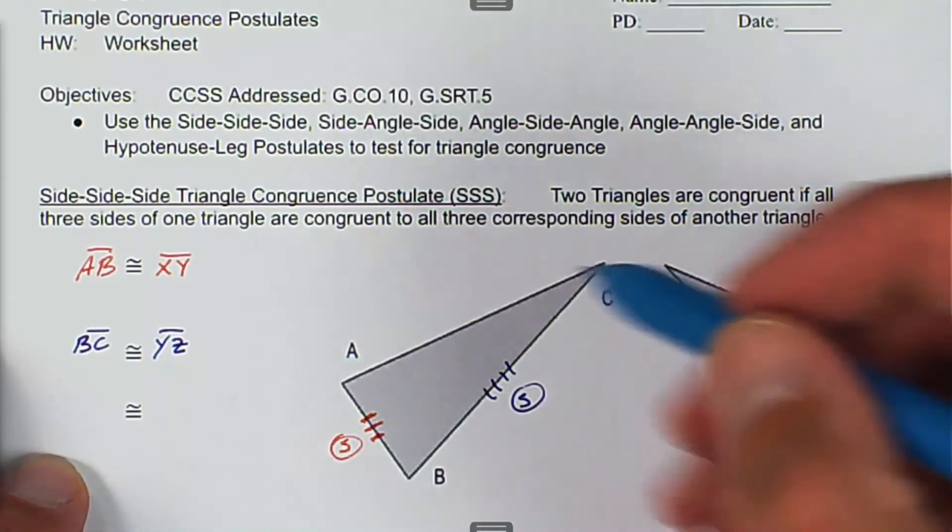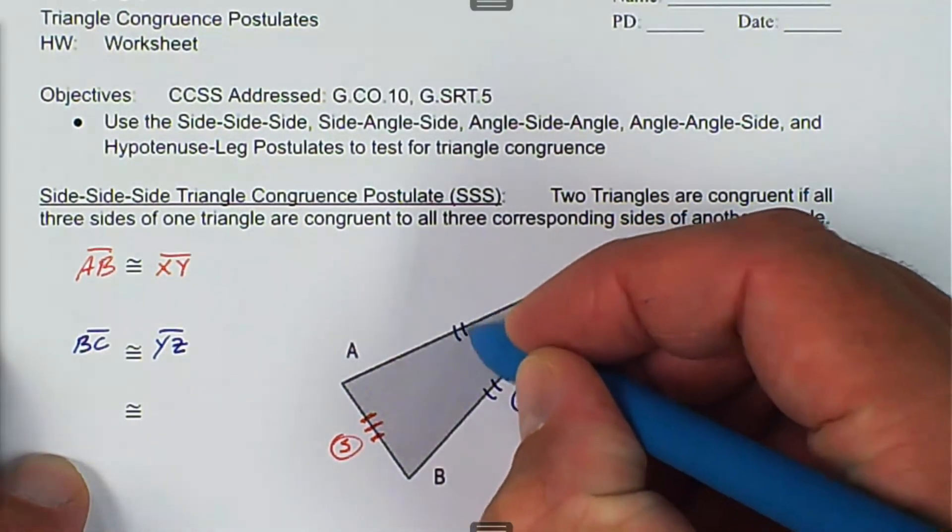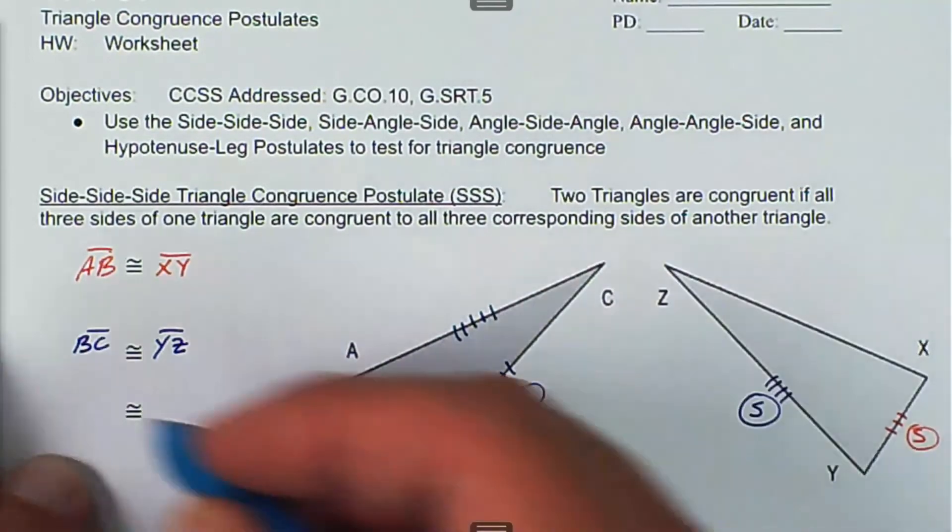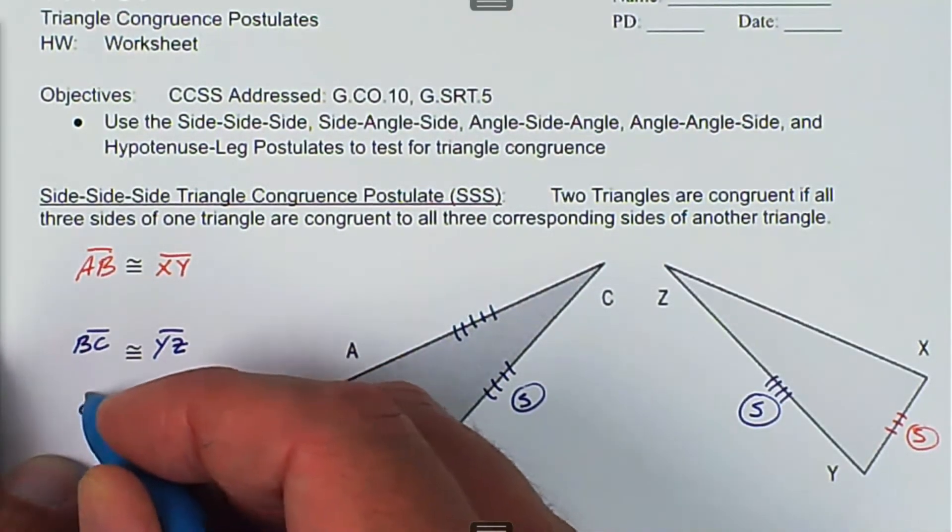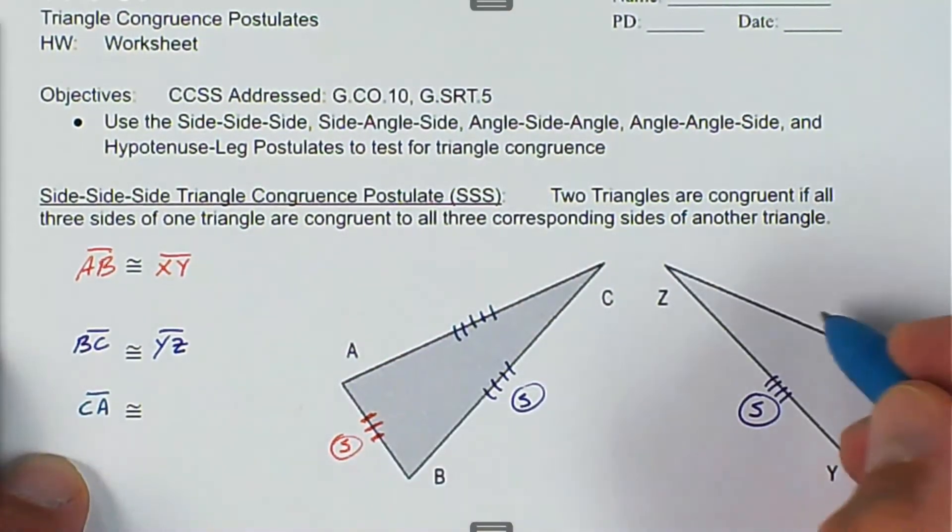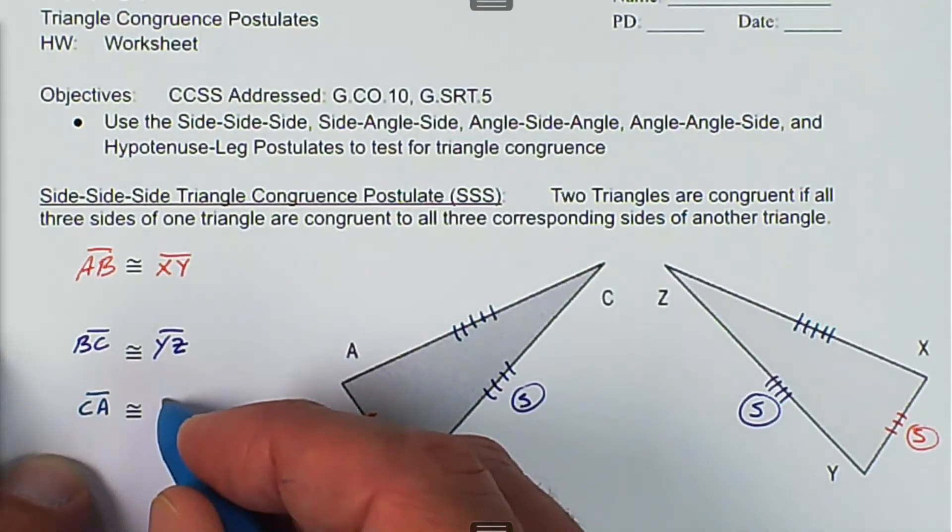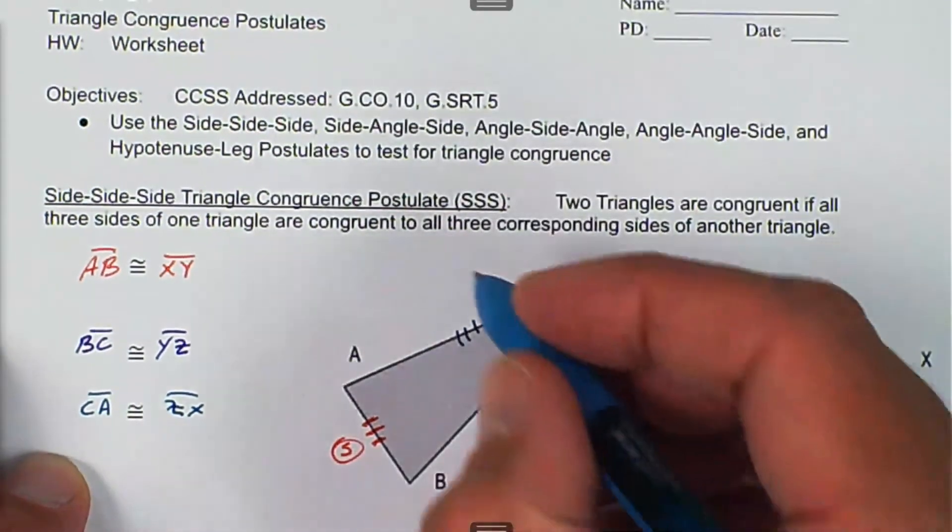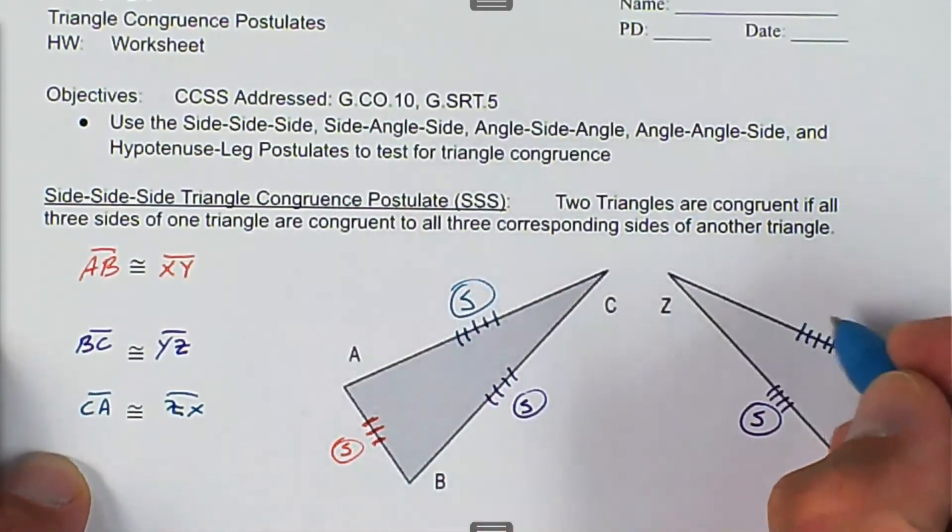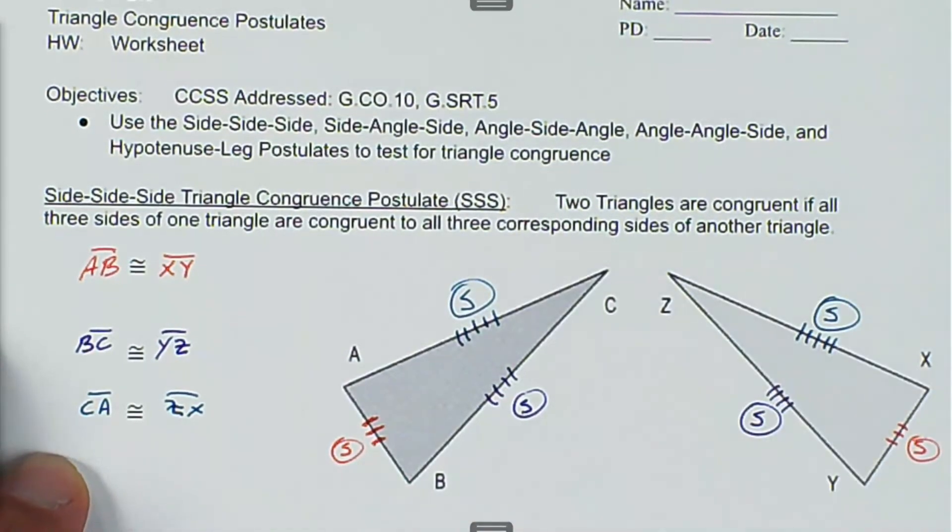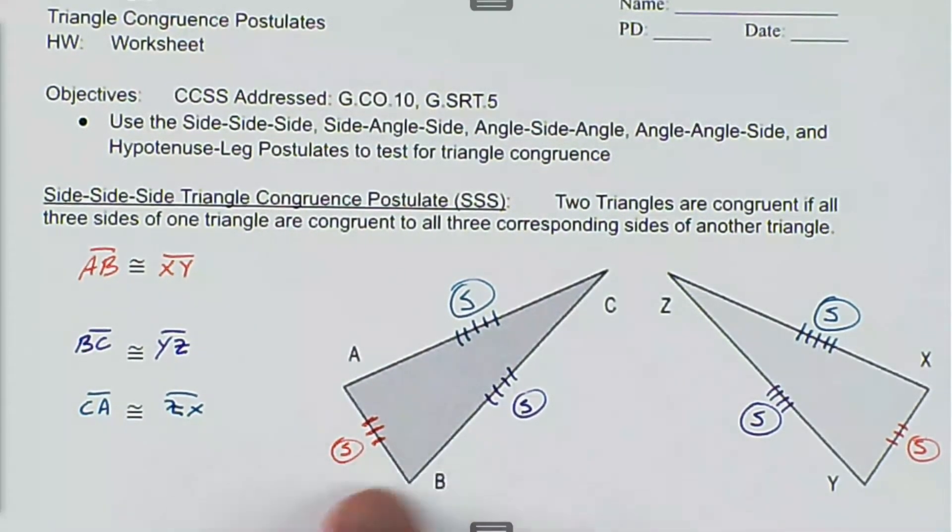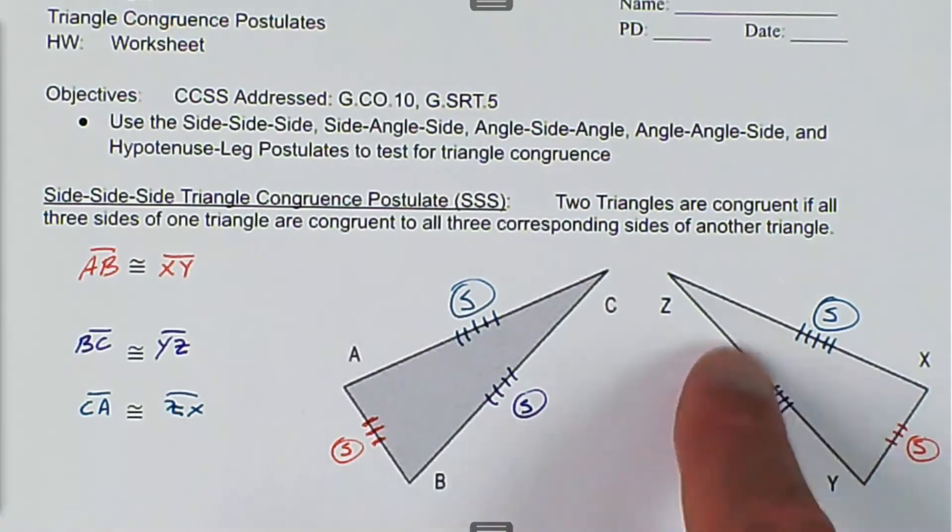And last, we have CA to ZX, and that's another side. So all the corresponding sides are congruent.